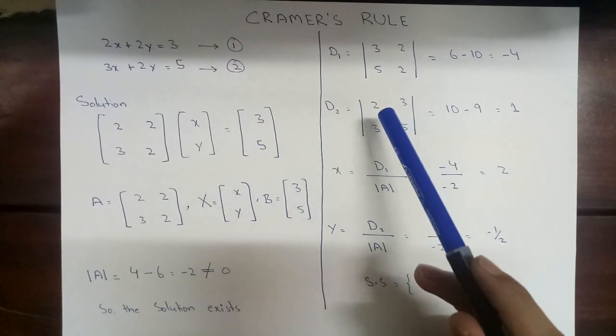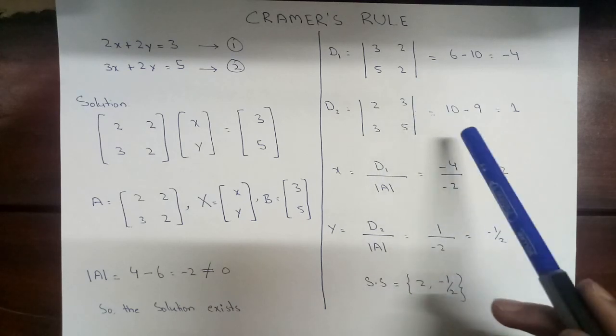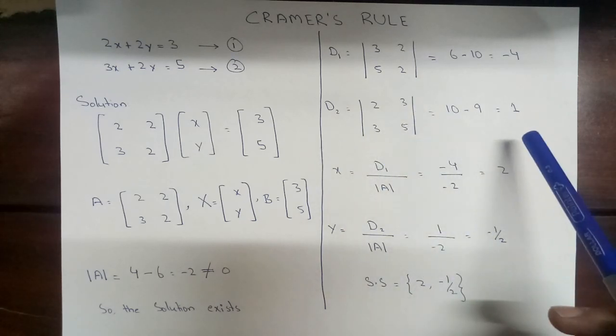So now 2 times 5 will be 10 minus 3 times 3 will be 9. The determinant of D2 is 1.